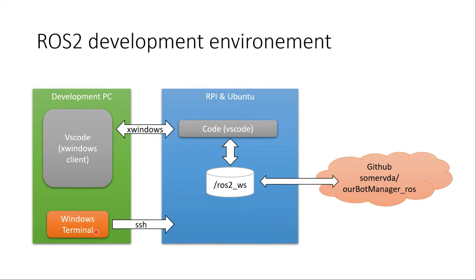I set up a GitHub repository called our bot manager underscore ROS. We'll use that to keep a local Git repository and a remote GitHub repository of anything that goes into the source directories of ROS2. For development I also use SSH — either from the Windows terminal session or from the terminal pane in VS Code.